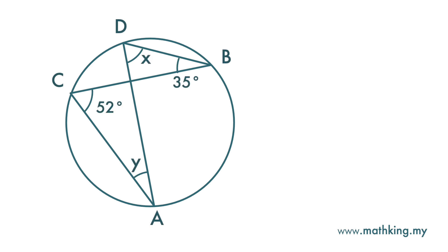Here we want to find x and y. Let's first look at this 52 degrees angle at the circumference — it is an angle subtended by arc AB. This line rises from point A, touches point C, and then back to point B. Note that angle x at the circumference is also subtended by the same arc AB.